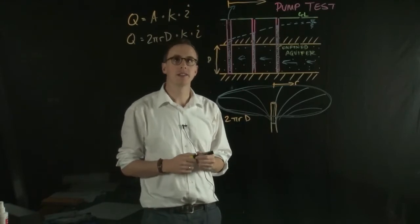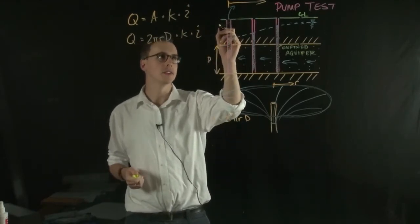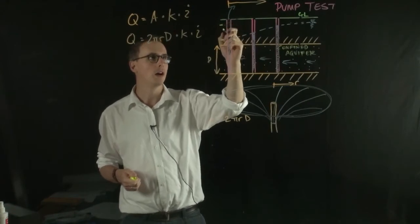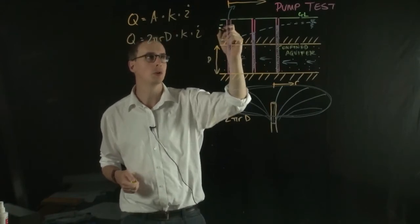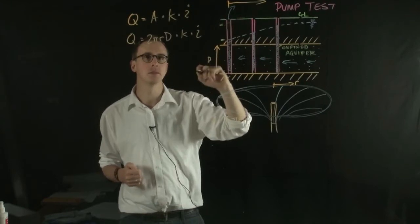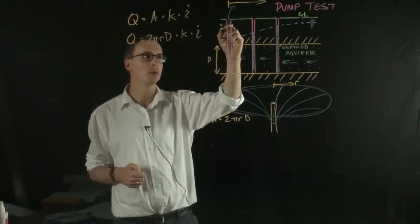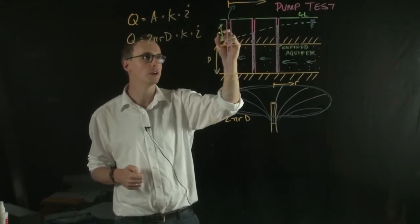So the hydraulic gradient or the I value is related to the drawdown. So the amount of the change in water level between its original position in the pumping well and the position that we've taken it to. So this is called the drawdown.